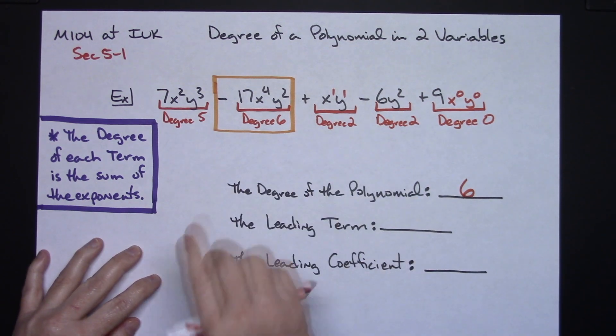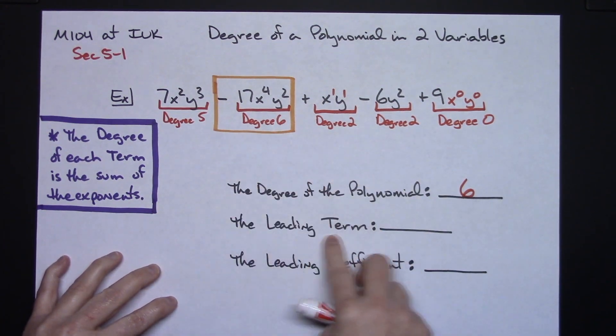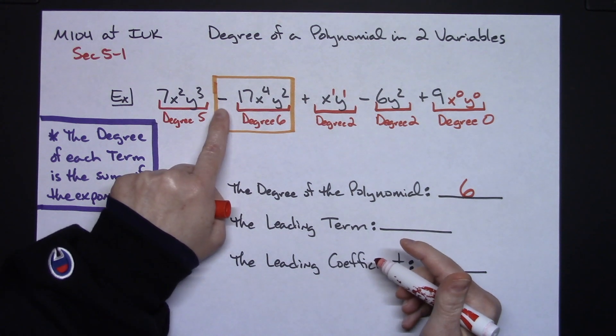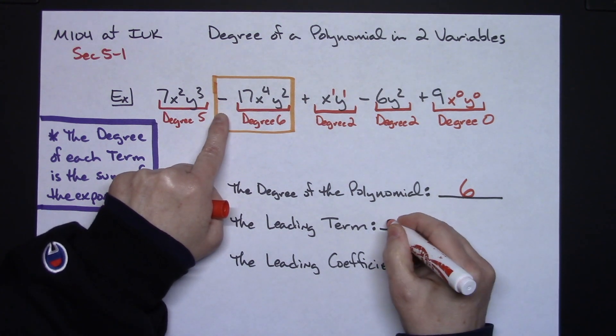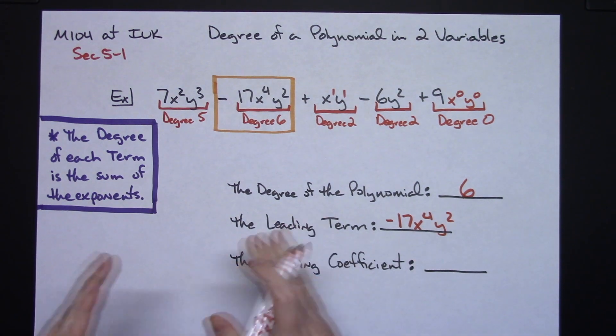Now because that is the highest degree term, then that means that that term is the leading term. And I've got to remember to include the negative in front of that. So negative 17x to the fourth y squared is the leading term.